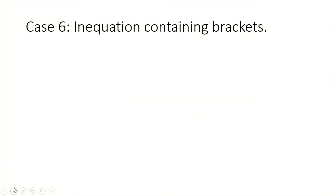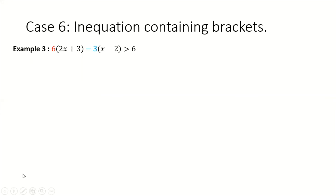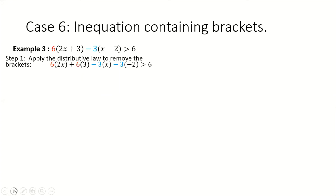Let's look at our third example. Here we now have two brackets on one side. Does the principle change? No, it doesn't. So the first step, we're going to apply our distributive law to remove the brackets. We're going to take 6 to multiply each term in the first bracket, then take minus 3 to multiply each term in the second bracket.